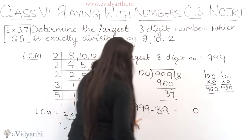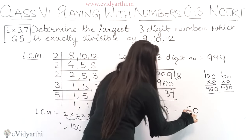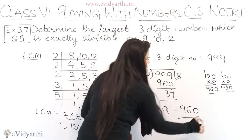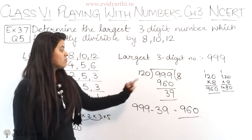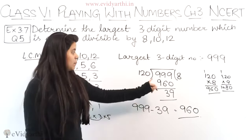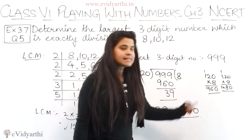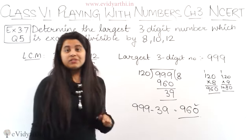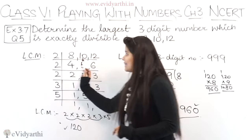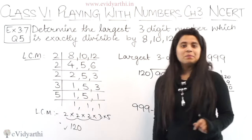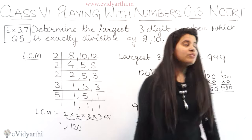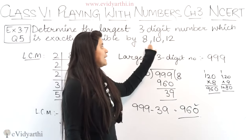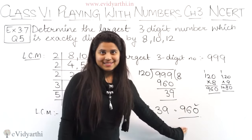999 minus 39: 9 minus 9 is 0, 9 minus 3 is 6, and this will be 9. So we get 960. And 960 is divisible by 120, because we just saw that 120 × 8 is 960. This means if 960 is divisible by 120, then it will also be divisible by all three numbers 8, 10 and 12. So we can say that the largest 3-digit number divisible by 8, 10 and 12 is 960.